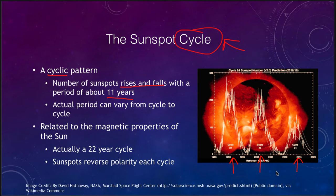Cycle 24 was a little bit later in coming than the previous cycle, so it is actually a little bit longer. It's not precisely 11 years, but it averages to 11 years over our observations of the sun. The actual period can vary a little bit, but it's a pretty good predictor over long-term timeframes.